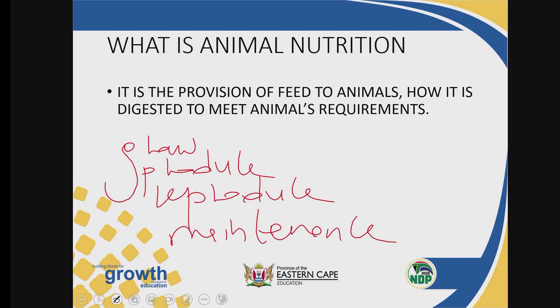For growth, production, and reproduction, you need a well-specialized feed because these animals are in production. They need feed to grow, to produce milk if it's a dairy breed, to produce eggs if it's a layer, or to produce offspring in the case of reproduction. In the case of maintenance, you give feed to these animals so that they will be able to survive. This leads us to the types of rations — we have the maintenance ration and the production ration.